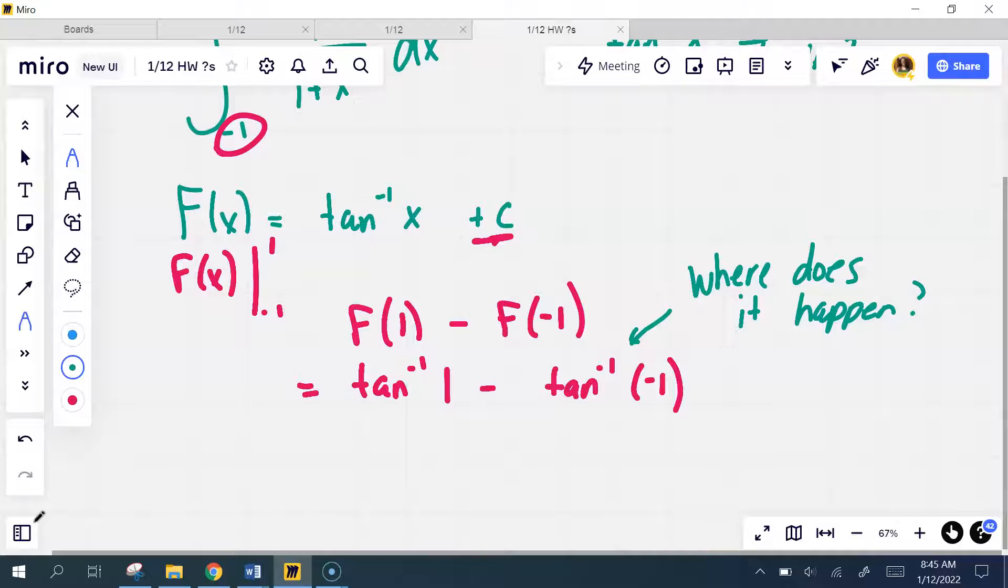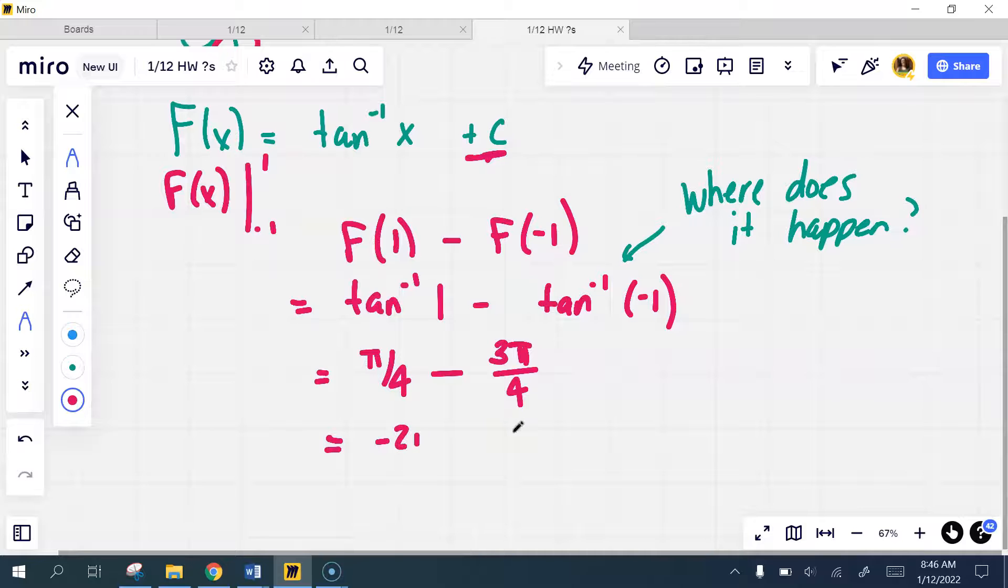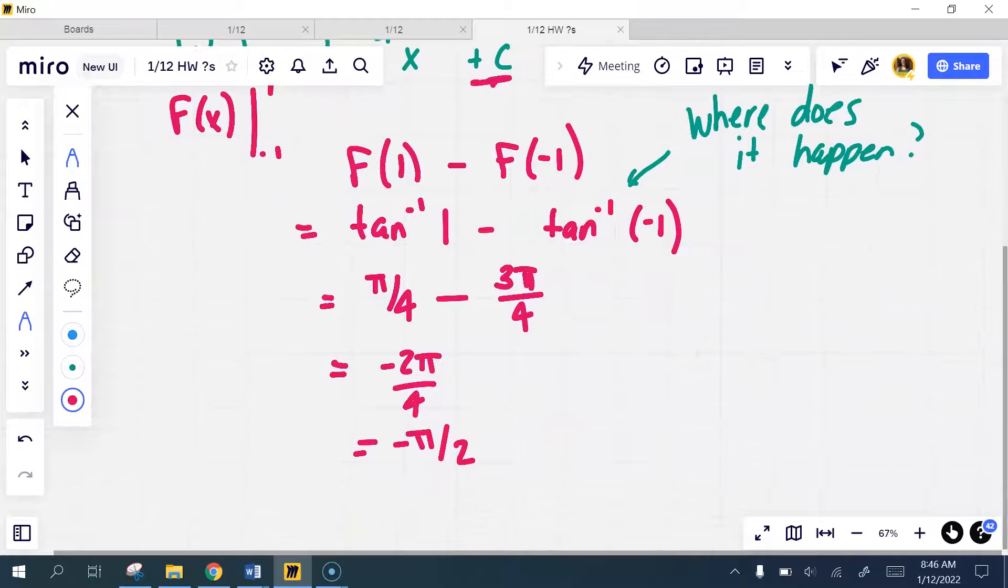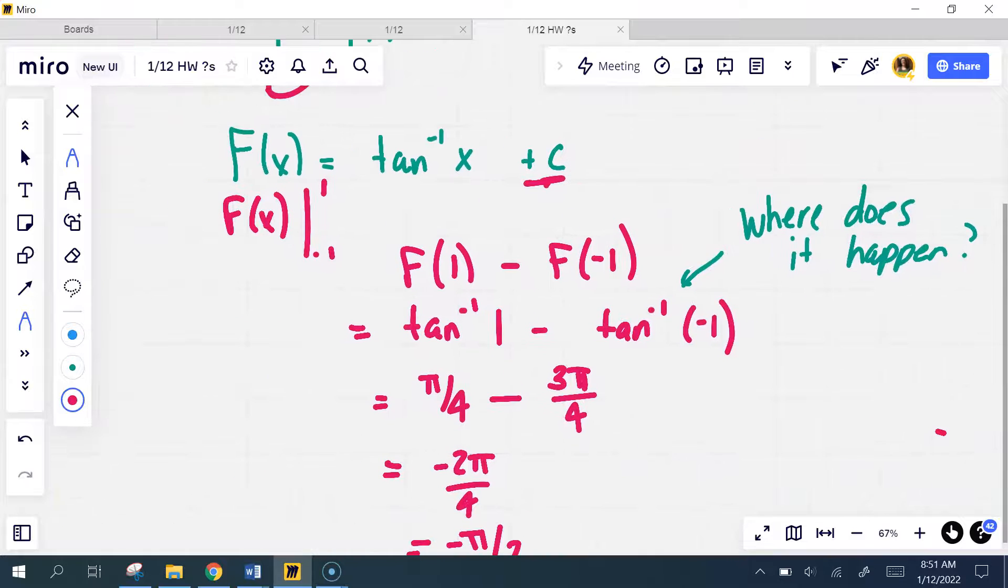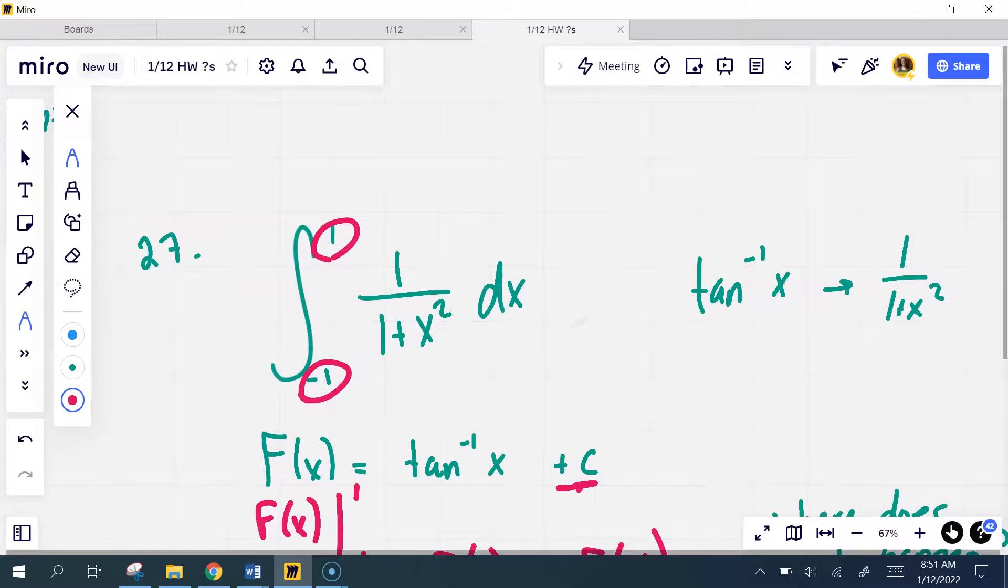So where is the tangent value on the unit circle? And of course that is at pi over 4, and then where is the negative 1? So again back to that unit circle and you want to, you're going to have to go over to quadrant 2, right? 3 pi over 4 we get negative 2 pi over 4 which is negative pi over 2. Alright so that is the number 27.